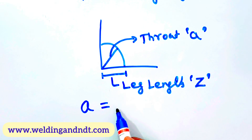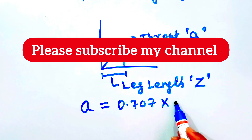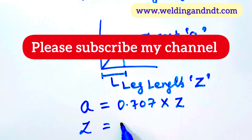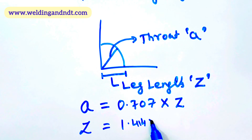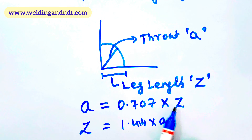Now there is a relation between throat and leg. To find the throat, multiply the leg by 0.707. To find the leg, multiply the throat by 1.414. So if you multiply throat by 1.414 you get leg, and if you multiply leg by 0.707 you get throat.